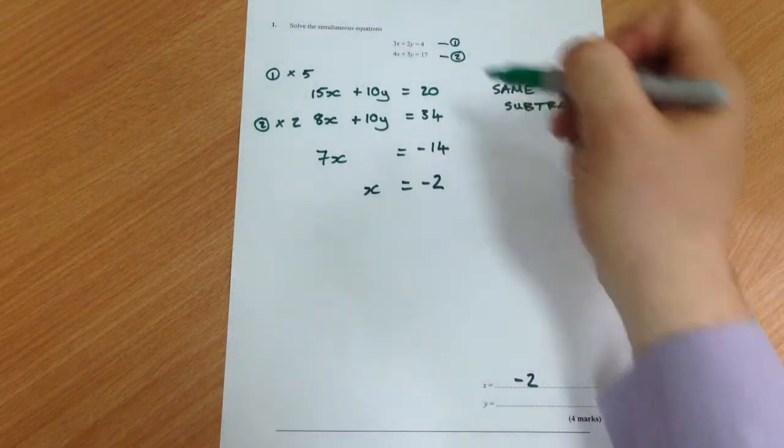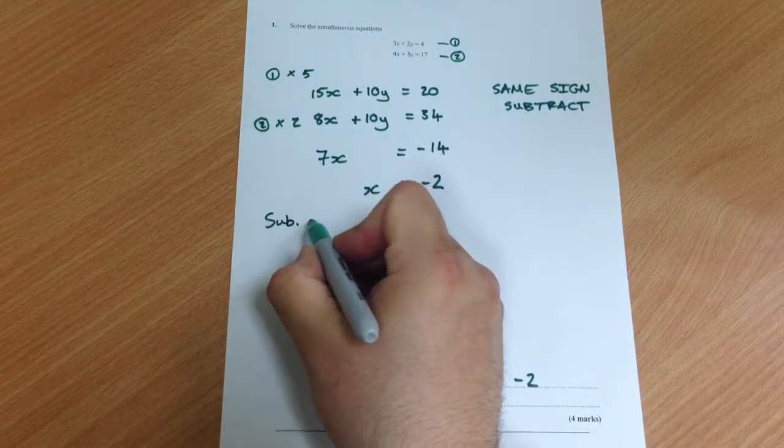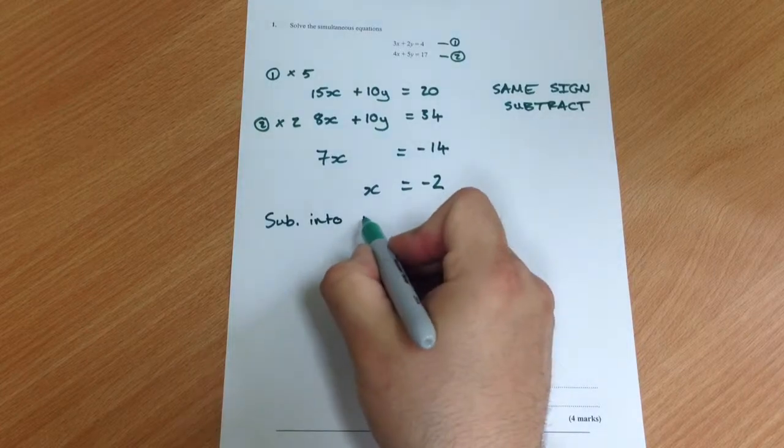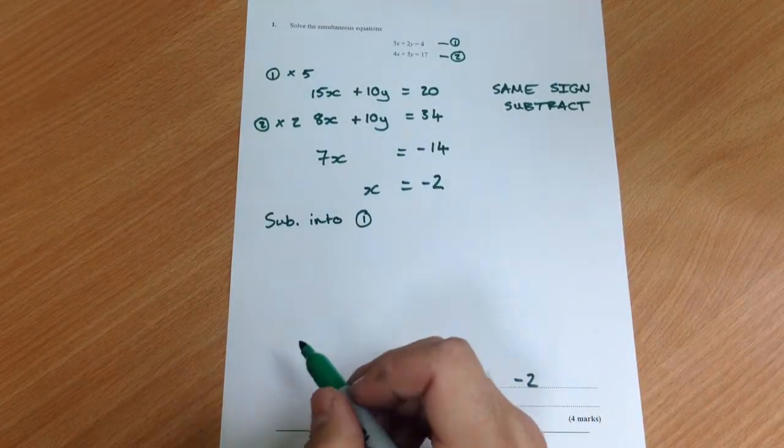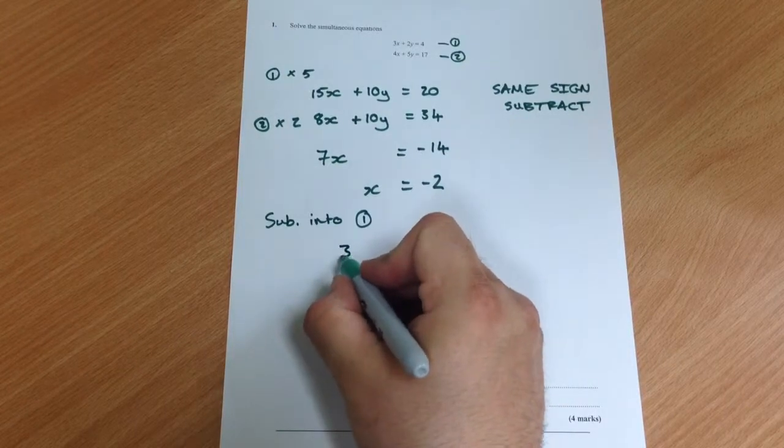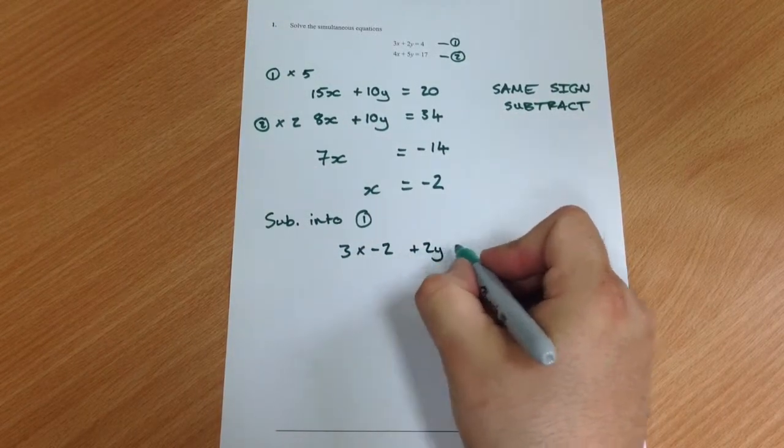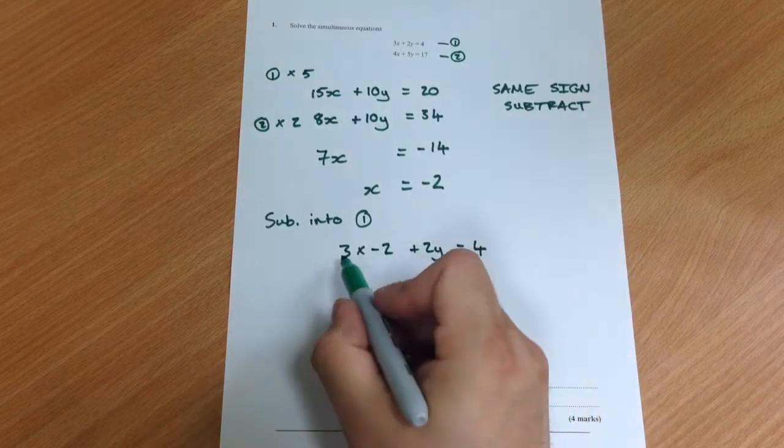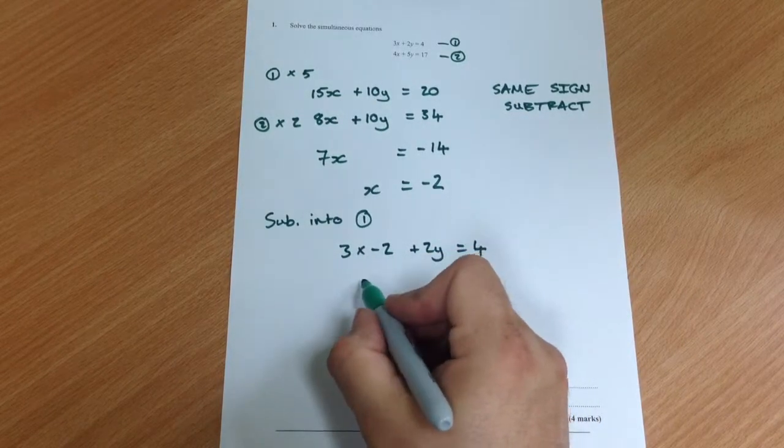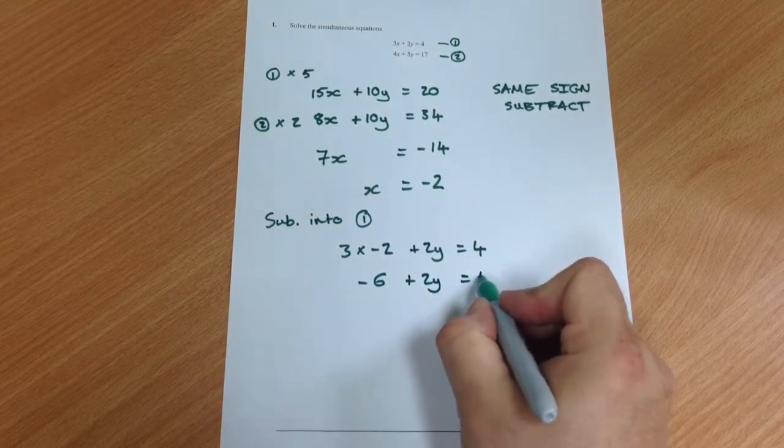we can substitute that back into one of our original equations. Sub into equation 1, it doesn't matter which equation you pick, you could use either. So 3 times negative 2 plus 2y equals 4. 3 times negative 2 is negative 6 plus 2y equals 4.